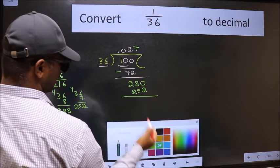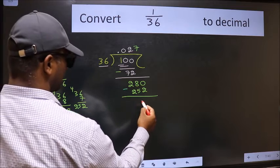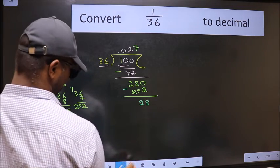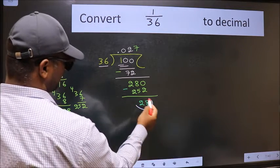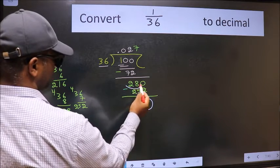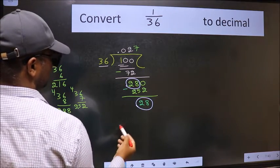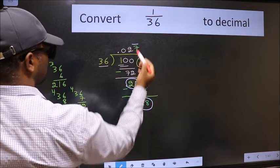Now we should subtract. We get 28. We got 28 again. Earlier we also got 28, which means we get a bar on this number.